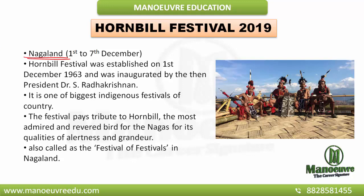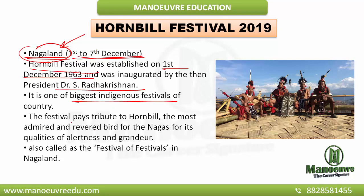The Hornbill Festival is a part of Nagaland state. It is celebrated from 1st to 7th of December every year. Hornbill Festival was established on 1st December 1963 and was inaugurated by the then President Dr. S. Radhakrishnan. It is one of the biggest indigenous festivals of our country. The festival pays tribute to the Hornbill, which is the name of a bird.